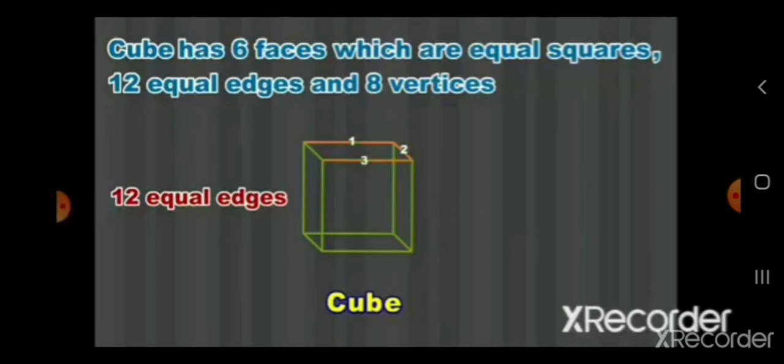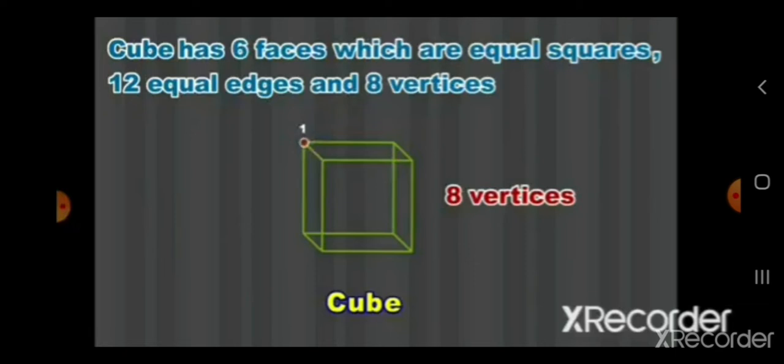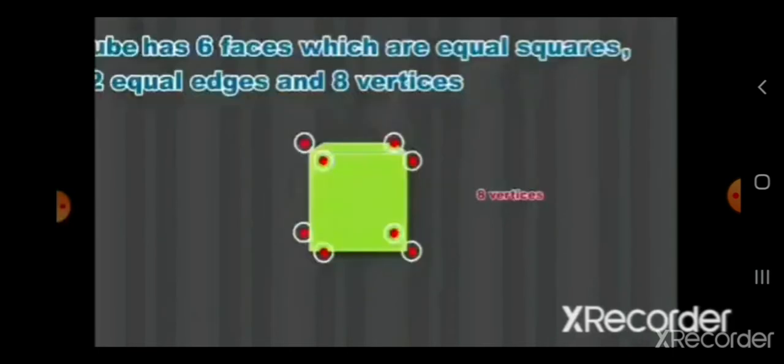How many edges it is having? 12. 1, 2, 3, 4, 5, 6, 7, 8, 9, 10, 11 and 12. So a cube has 12 equal edges. And how many vertices? 8. 1, 2, 3, 4, 5, 6, 7 and 8 vertices. Vertices are nothing but corners as I told you.